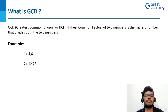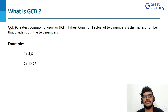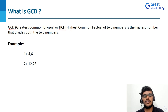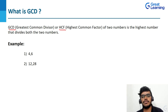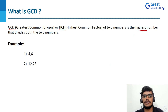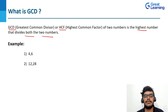GCD stands for greatest common divisor, and we also call it HCF, which is nothing but highest common factor. To calculate the HCF of two numbers, it is the highest number — or you can say the largest number — that divides both the two numbers. Let's take an example to understand in a better way.